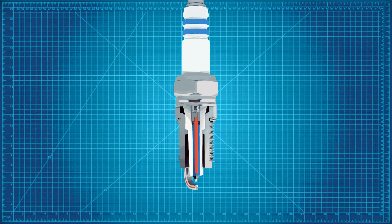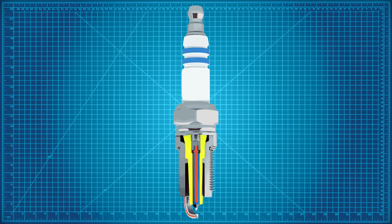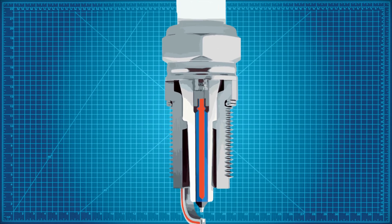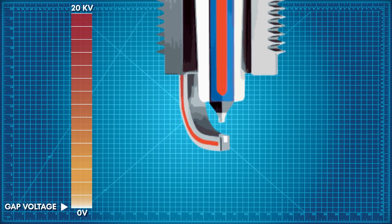All spark plugs are essentially composed of two electrodes separated by an insulator. Each electrode concentrates at a spark gap where spark generation occurs. As the initial current flows from the ignition coil to the spark plug's electrodes, the flow of electricity is initially blocked by the insulating properties of the air-fuel mixture within the gap.